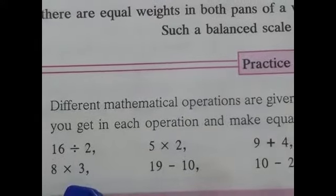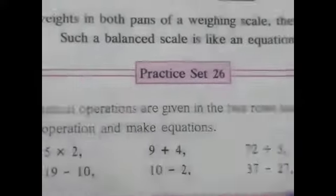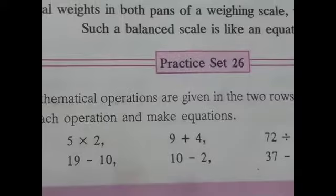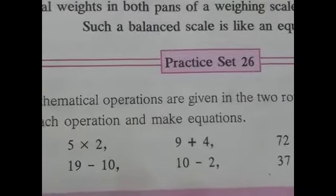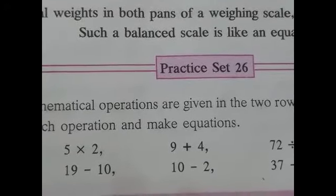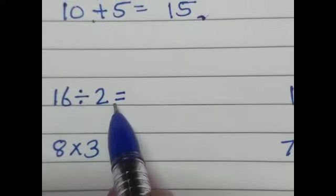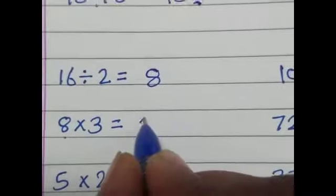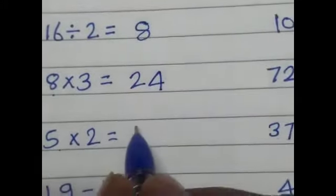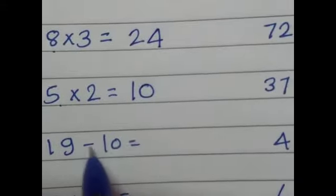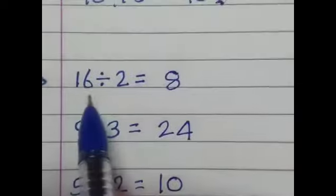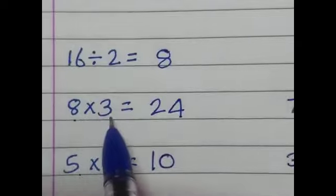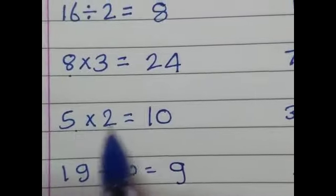We need to divide this. Then, here we see the mathematical operation. Here we multiply, here we multiply, here we subtract, here we plus, here we minus, here we divide, here we minus and here we plus. That is the difference in mathematical operation. Now, we can solve this first problem and we will get the same number. 16 divided by 2 is equal to - 16 divided by 2, the answer is 8. 8 multiplied by 3 is equal to 24. 5 multiplied by 2 is equal to 10. 19, 10 subtracts from 19 is equal to 9.